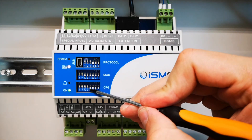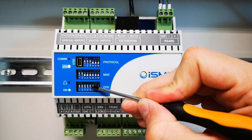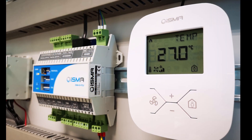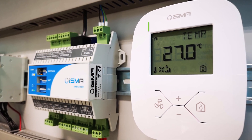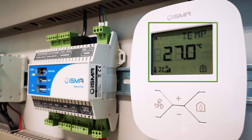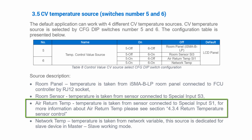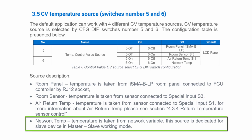The combination of the 5th and 6th DIP switches decides where the temperature control value will be taken from. There are 4 options: by default it will be the temperature sensor inside our ISMA VLP panel connected to the ISMA VFCU; other options are a room temperature sensor connected to special input number 3, a return air temperature sensor connected to special input number 1, or from a network variable.